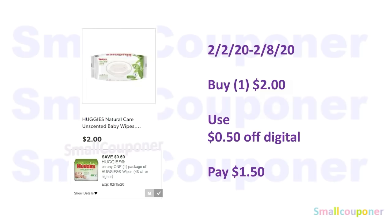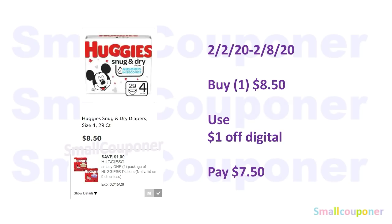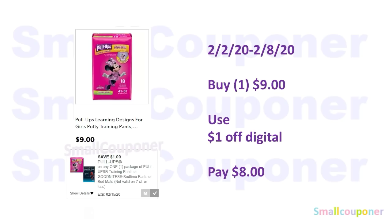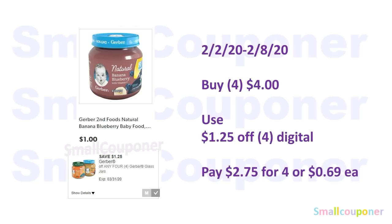Baby deals. The Huggies Wipes are $2.00; use the $0.50 off digital and pay $1.50. The Huggies Snug and Dry Diapers are $8.50; use the $1 off digital and pay $7.50. The Pull-Ups are $9.00; use the $1 off digital and pay $8.00. The Gerber glass jars are $1.00 each — buy four for $4.00, use the $1.25 off digital, and pay $2.75 for four or $0.69 each.